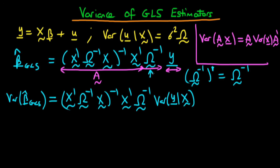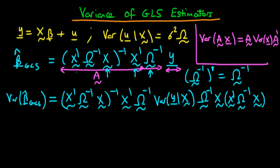The first term of the transpose is Ω⁻¹. The next term is X' transposed, which yields X. Working through the bracketed term, the first part gives X transposed, and then we get Ω transposed times X transposed, all to the power minus 1.